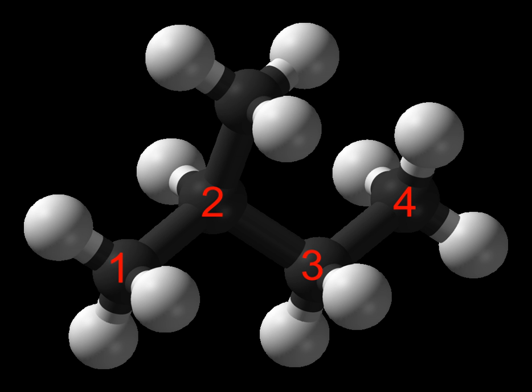The IUPAC nomenclature for alkanes is based on identifying hydrocarbon chains. Unbranched saturated hydrocarbon chains are named systematically with a Greek numerical prefix denoting the number of carbons and the suffix '-ane'. In 1866, August Wilhelm von Hofmann suggested systematizing nomenclature by using the whole sequence of vowels a, e, i, o, and u to create suffixes: -an, -een, -ine or -yne, -one, -un for the hydrocarbons CnH2n+2, CnH2n, CnH2n−2, CnH2n−4, CnH2n−6.